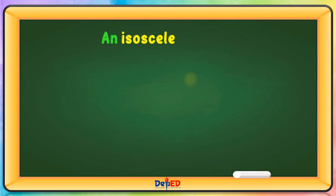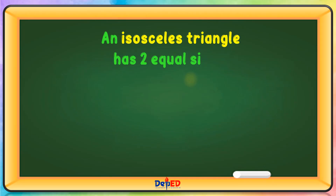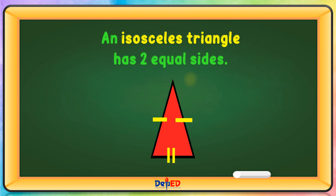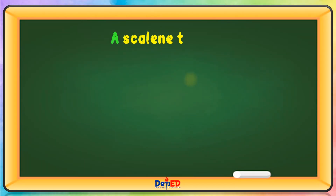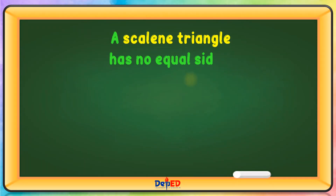An isosceles triangle has two equal sides. A scalene triangle has no equal sides.